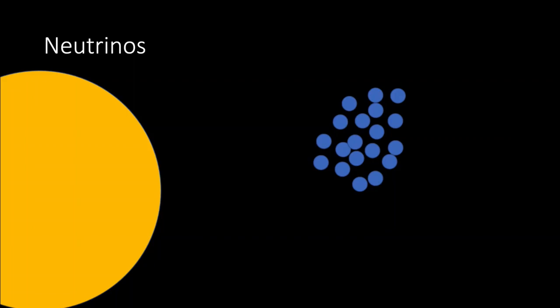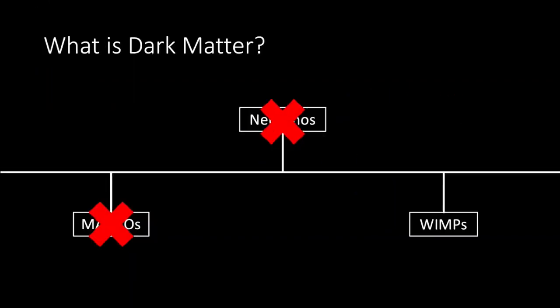However, there is a problem. Neutrinos are travelling way too fast to clump together like dark matter is observed to do, so this can't be right. Or maybe there's a super heavy neutrino that we haven't discovered yet which could make this work.